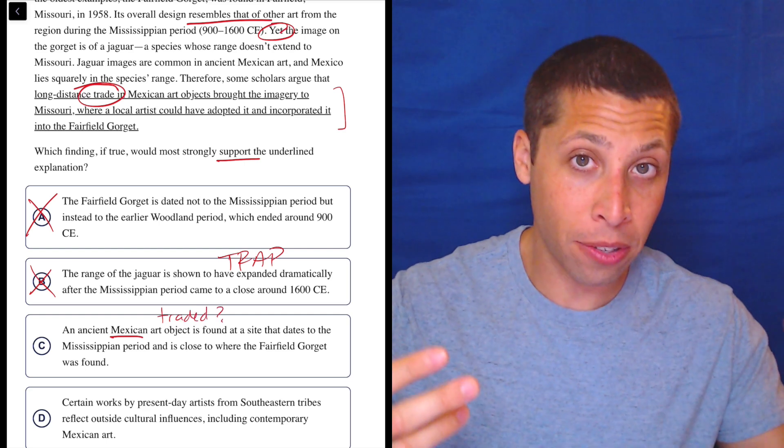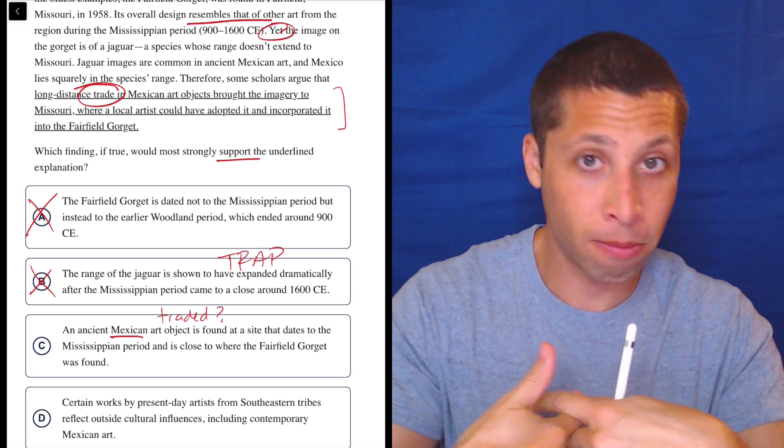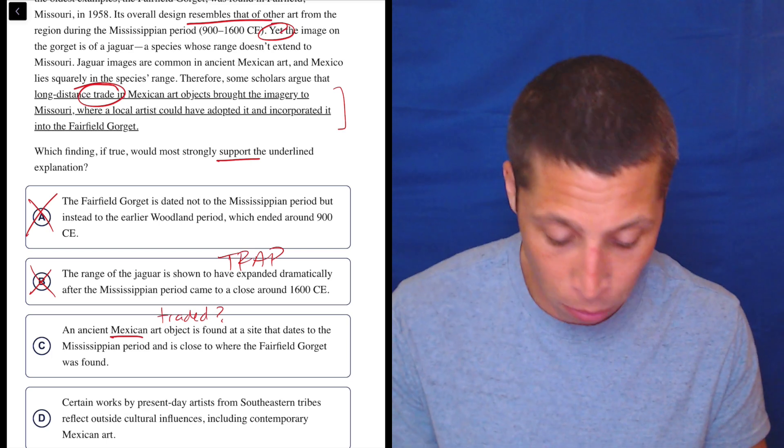But at least if there's a Mexican object there, then it suggests maybe that the Mexicans and the Missourians were talking to each other. I don't know. Let's move on. Let's look at D.